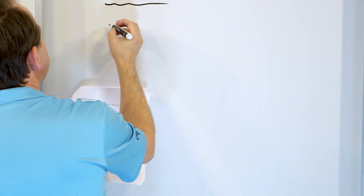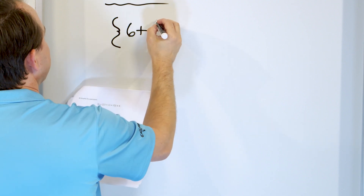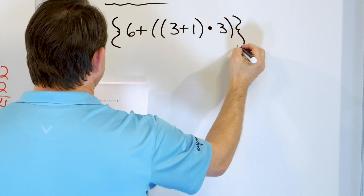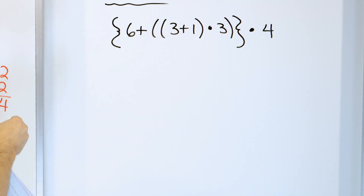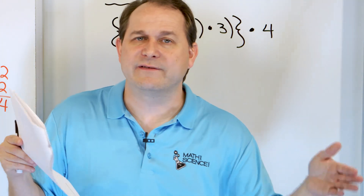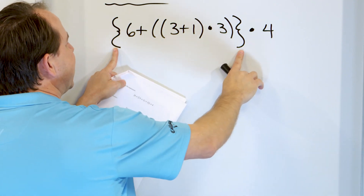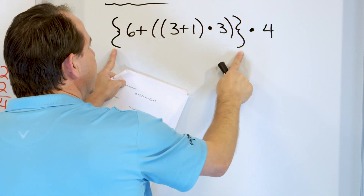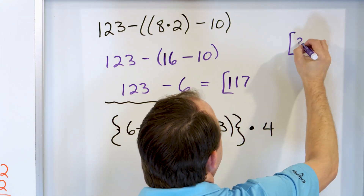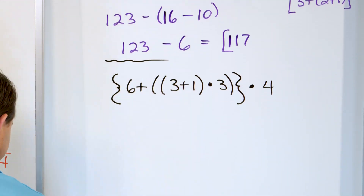Now I'm going to throw a little curve ball. Here's a curly brace, then a 6 plus double parentheses, 3 plus 1, close, times 3, close, closing curly brace, times 4. If you have parentheses nested three or four levels deep, it gets very hard to keep track since all parentheses look the same. So you might see curly braces — just another set of parentheses with a special shape. You can also see brackets. You just treat them like parentheses. The curly brace goes with the other curly brace, and the inner parentheses go together.